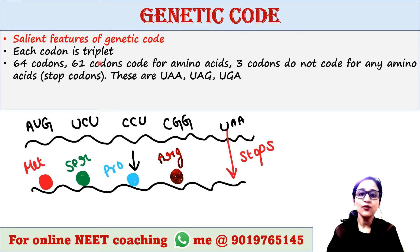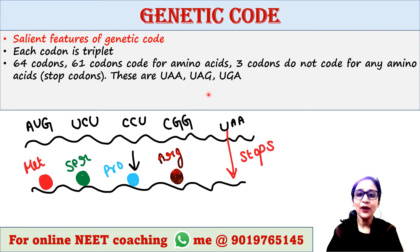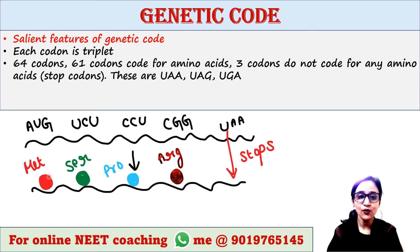Among the 64 codons, 61 codons code for amino acids and 3 codons do not code for any amino acid — they function as stop codons. These 3 stop codons are UAA, UAG, and UGA. Protein generation starts from the codon AUG, which is the start codon. AUG initiates protein synthesis and codes for methionine.